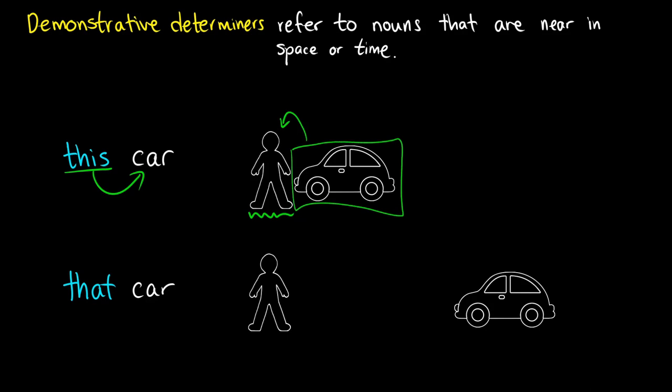If we use a word like that car, then that is describing the type of car we have, so it's acting as a determiner for the noun, and we should have some sort of distance between us and the car that we're talking about.